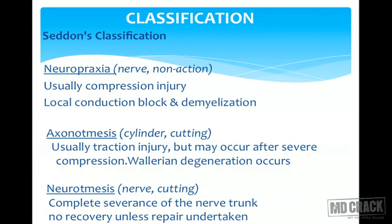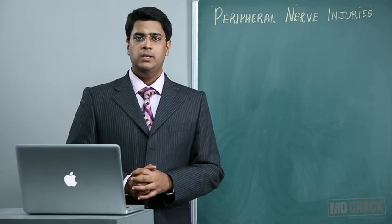Neuropraxia is usually where there is a compression injury, and there is local conduction block and demyelination which occurs. In axonotmesis, there is usually a traction injury where there is a pull on the nerve, but it may occur after severe compression also. In this, Wallerian degeneration occurs.